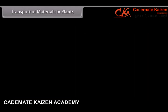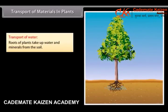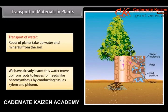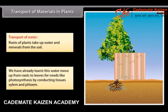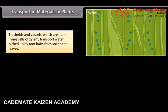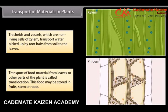Transport of materials in plants. Roots of plants take up water and minerals from the soil. This water moves up from roots to leaves for needs like photosynthesis by conducting tissues, xylem and phloem. Tracheids and vessels, which are non-living cells of xylem, transport water picked up by root hairs from the soil to the leaves. Transport of food material from leaves to other parts of the plant is called translocation. This food may be stored in fruits, stem or roots.